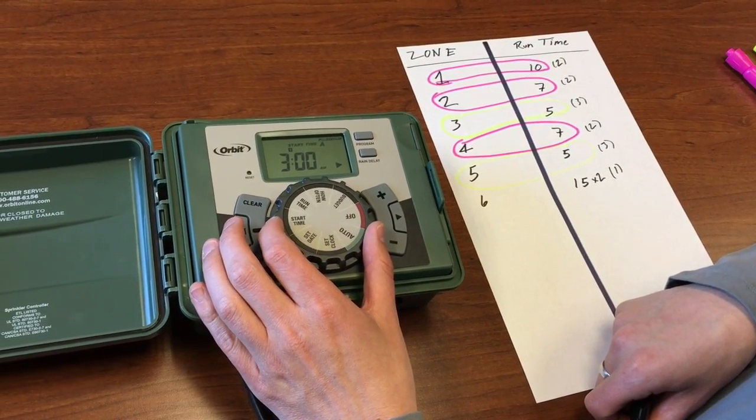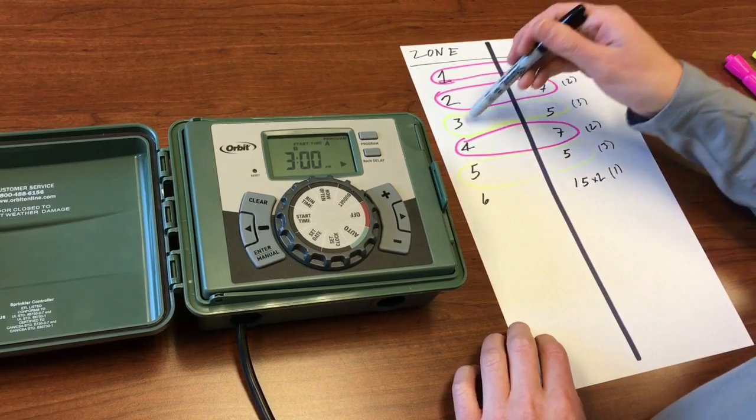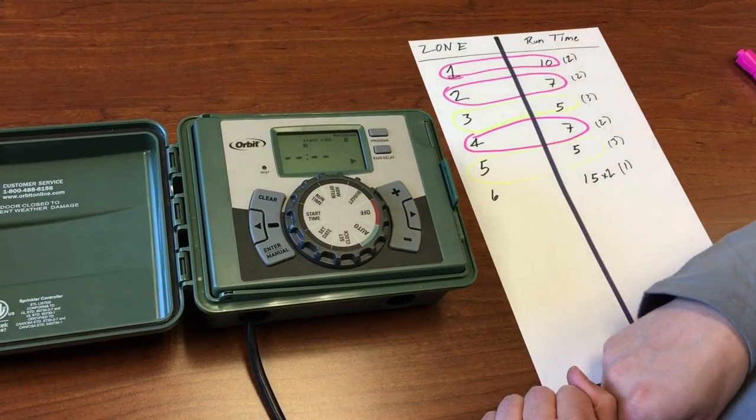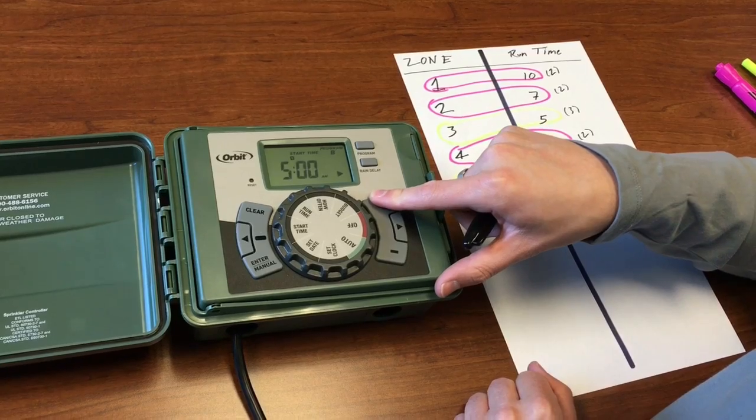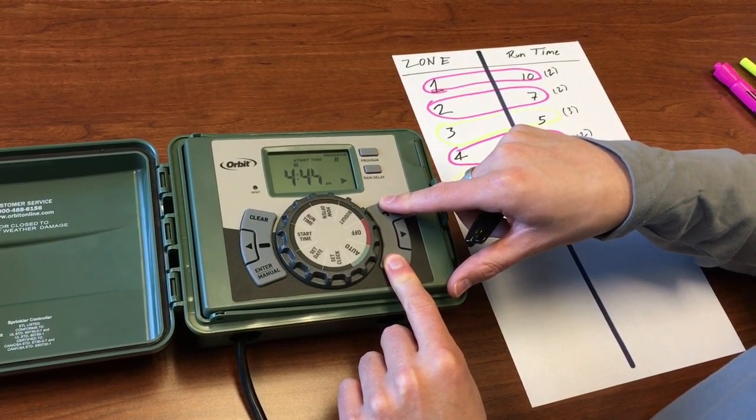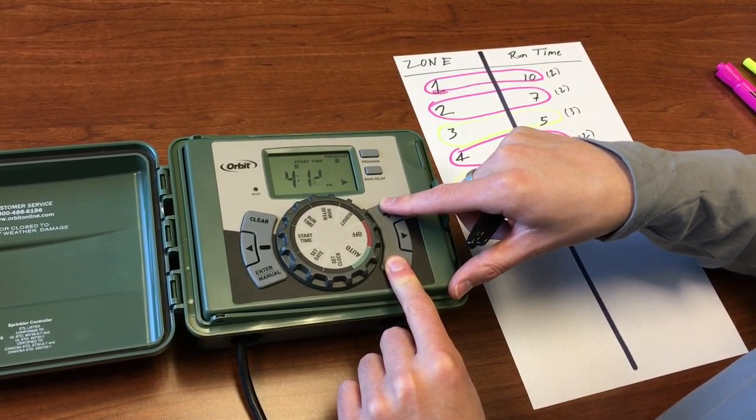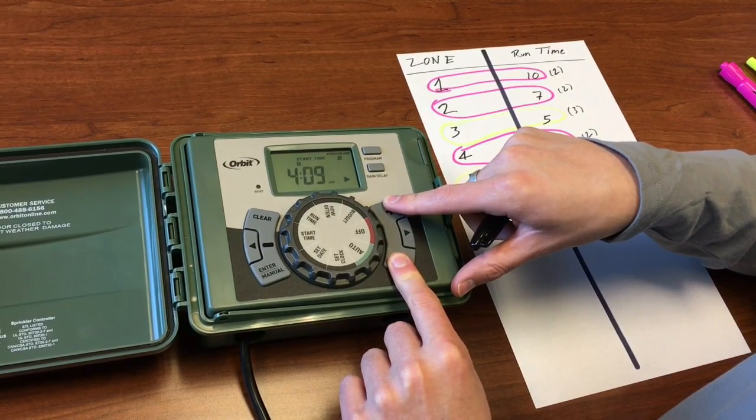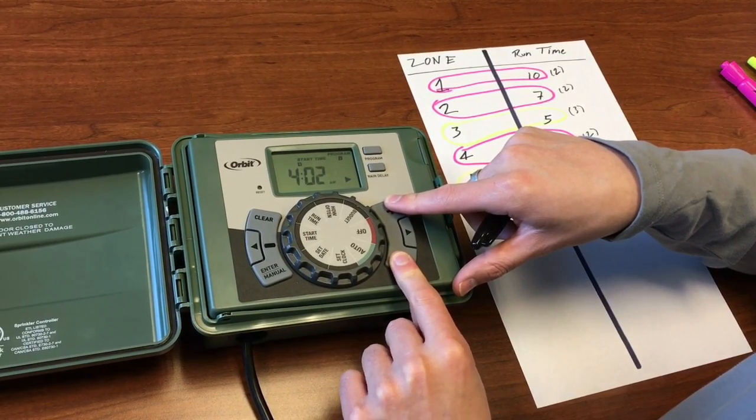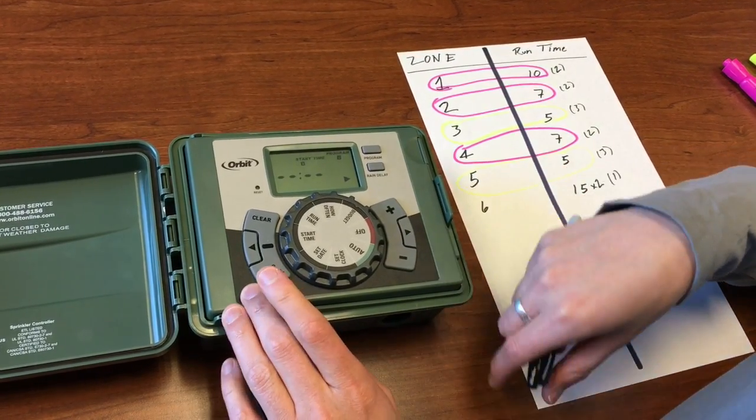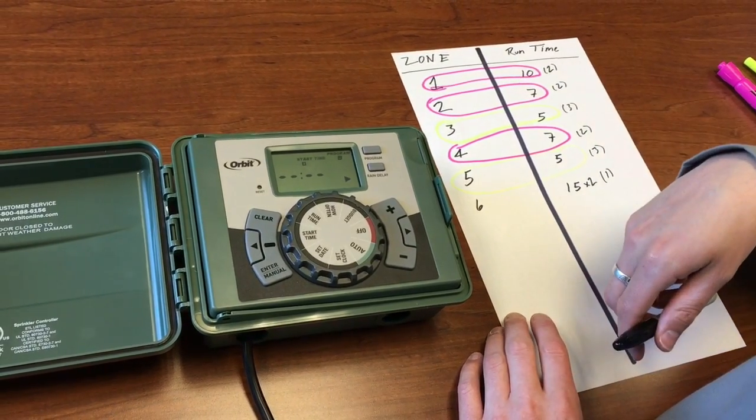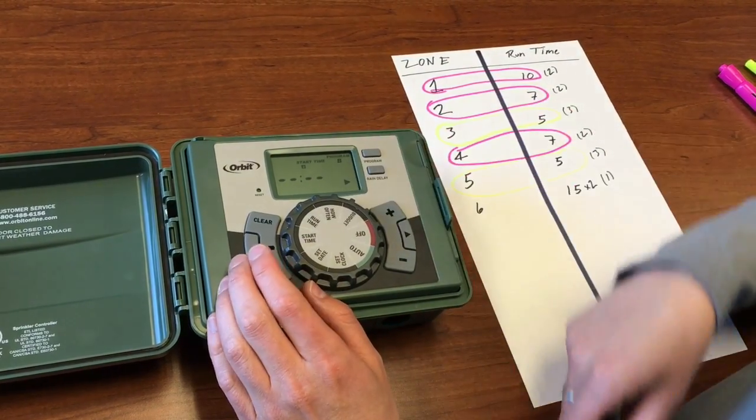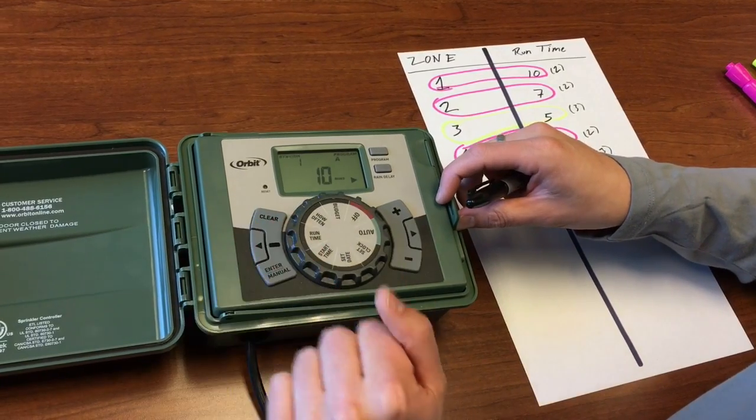Let's go to program B. That's zones 3 and 5 and we want those to start at 4 a.m. These also we're just running once, they're not going to have another start time. So we're going to leave that blank and we're going to go to our run time.